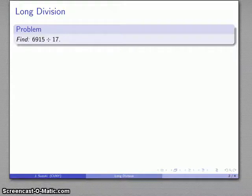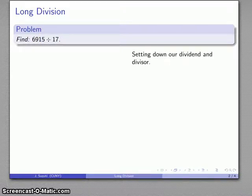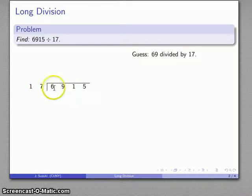Alright, so let's look at the long division algorithm. Let's take a typical problem: 6915 divided by 17. We're going to set down our dividend and divisor, 6915 divided by 17, and we begin with this process. 69 divided by 17 is going to be what?